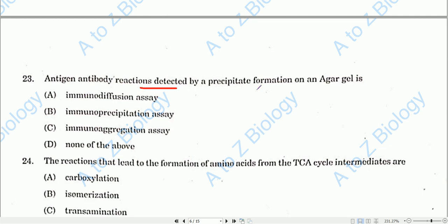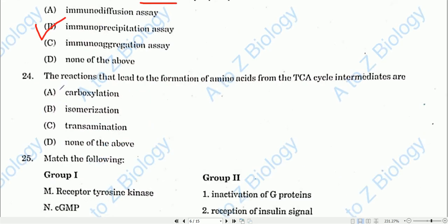Question number twenty-three: Antigen-antibody reactions detected by precipitate formation on an agar gel are known as an immunoprecipitation assay. Option B will be the correct one.